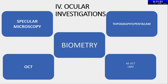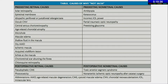Ocular investigations include specular microscopy, biometry, topography, OCT, and if required an ASOCT and UBM. We will cover biometry subsequently. For the image identification exercise, these conditions are important to identify when examining the patient - they affect your outcome during surgery by affecting IOL power calculations or post-operative recovery. Remember the table of 'why not 20/20' - pre-existing retinal and non-retinal causes, and post-operative retinal and non-retinal causes of why your patient is not 6/6 post-op.